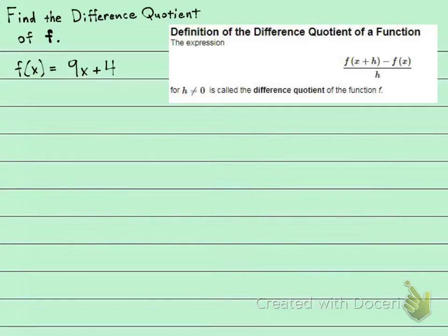We're going to find the difference quotient of this function right here. The function is f of x is 9x plus 4. And the difference quotient is given over here.